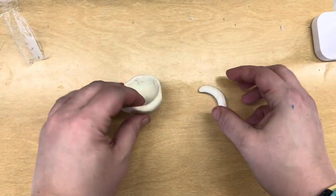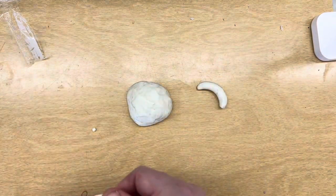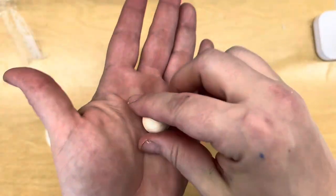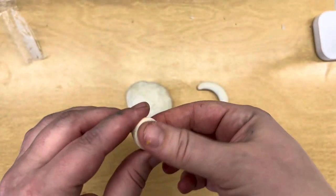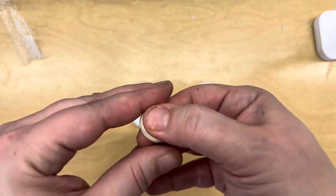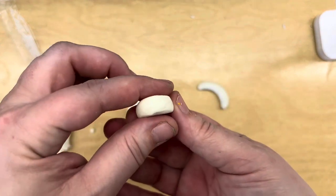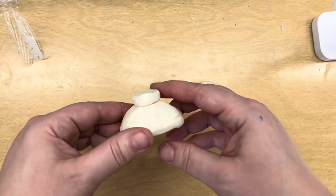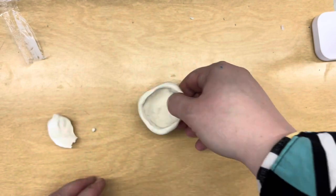Something else you can do with a pinch pot bowl is give it a base. I'm going to roll a ball and pinch it to be a little bit short, like a donut or cookie shape and put it on the bottom. Now my bowl has a fancy bottom.